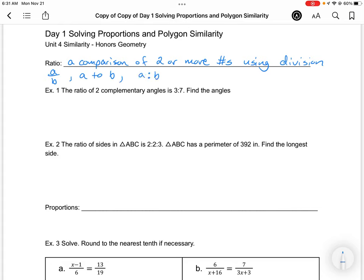In our first example, the ratio of two complementary angles is 3 to 7. We want to find those angles. The word complementary means they add up to 90 degrees. When it says the ratio of the angles is 3 to 7, it's not saying the angles are 3 degrees and 7 degrees. Those are the proportions with which we would get up to 90 degrees total.